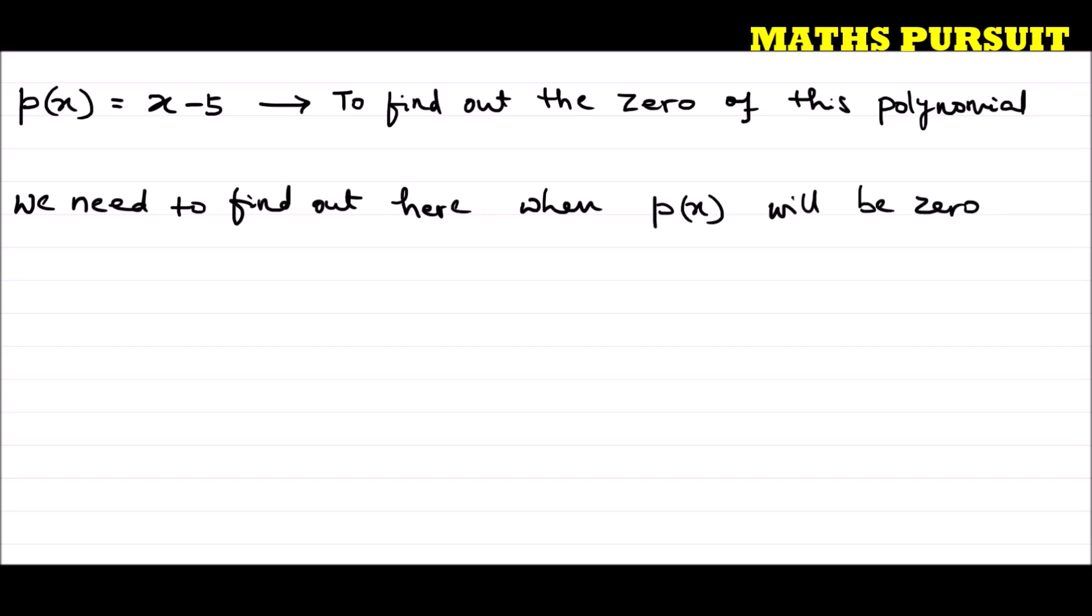That means we can say x - 5 = 0. If we write x - 5 = 0, then we can find out the value of x. Or I can write x = 0 + 5.